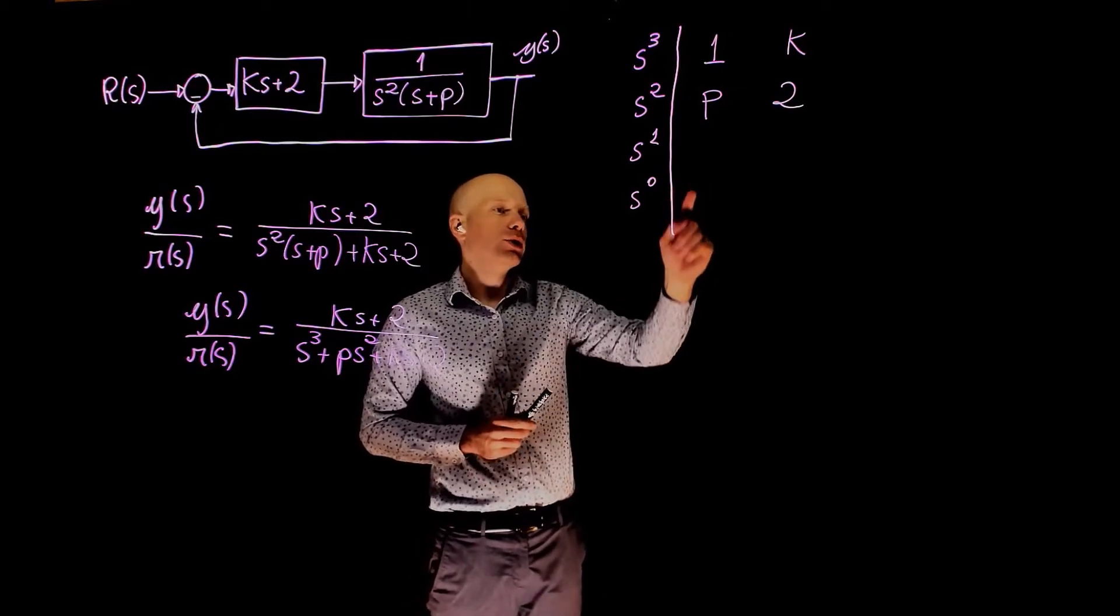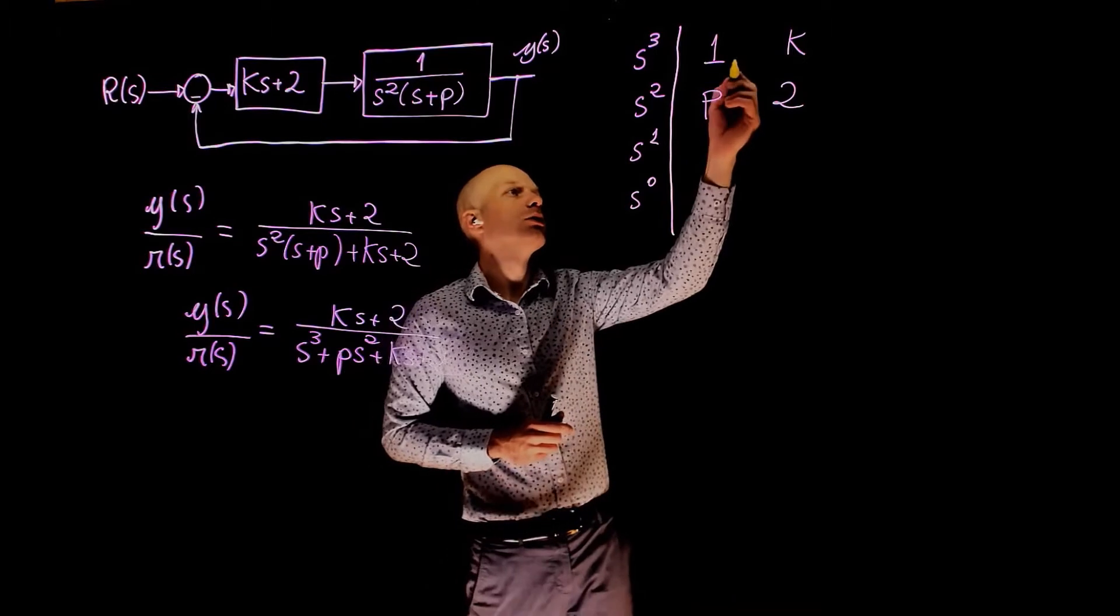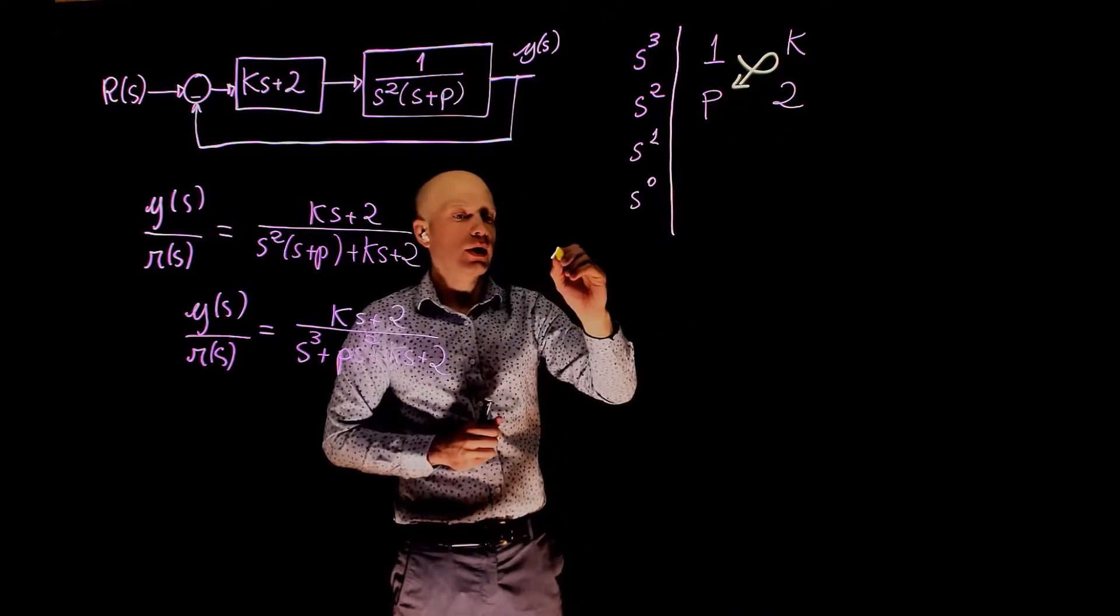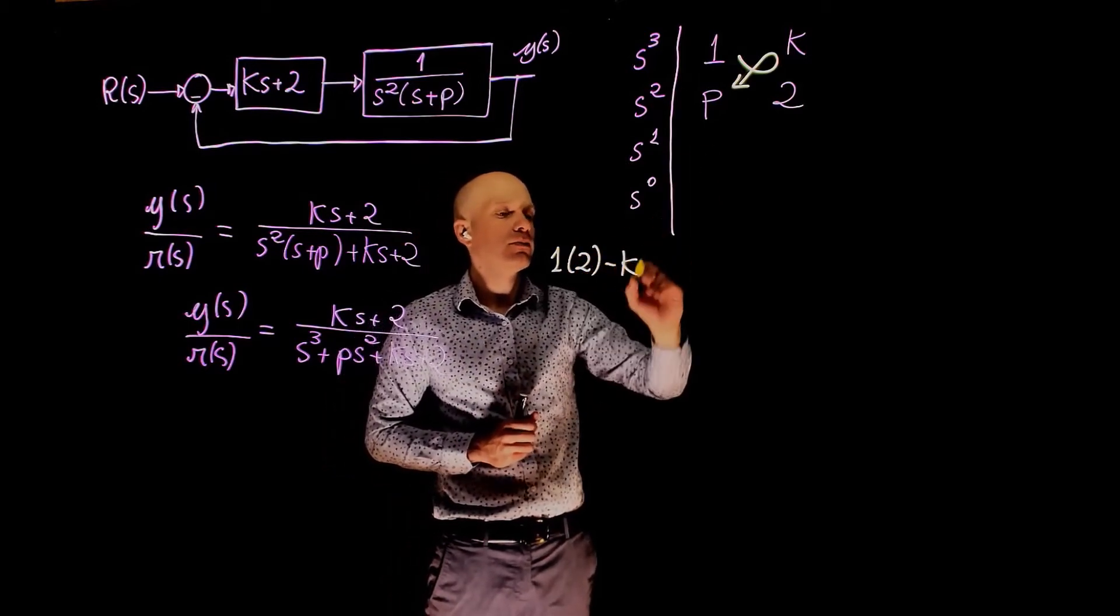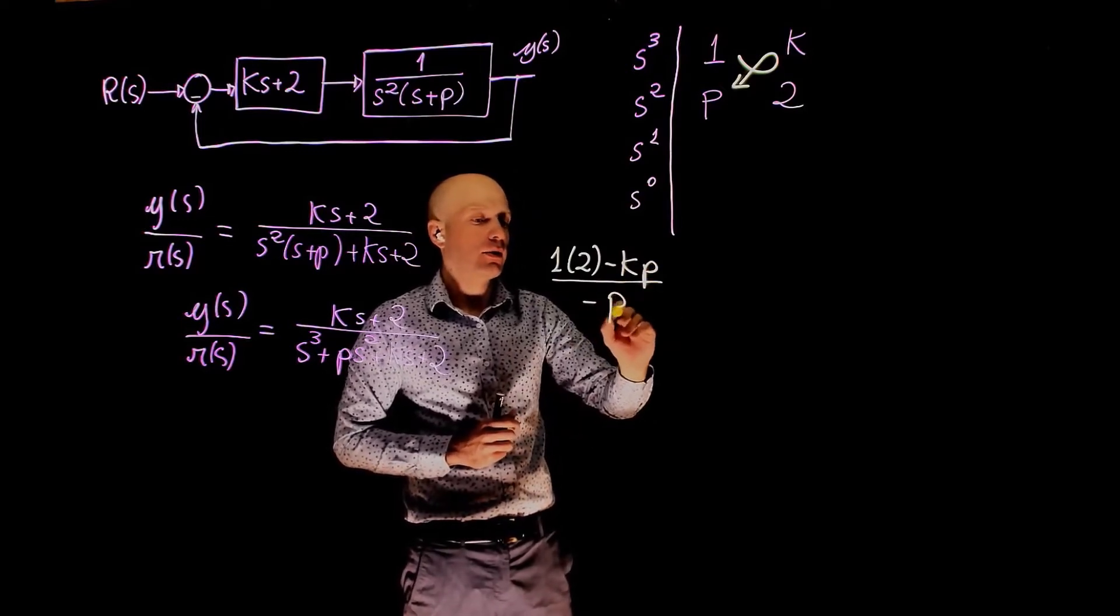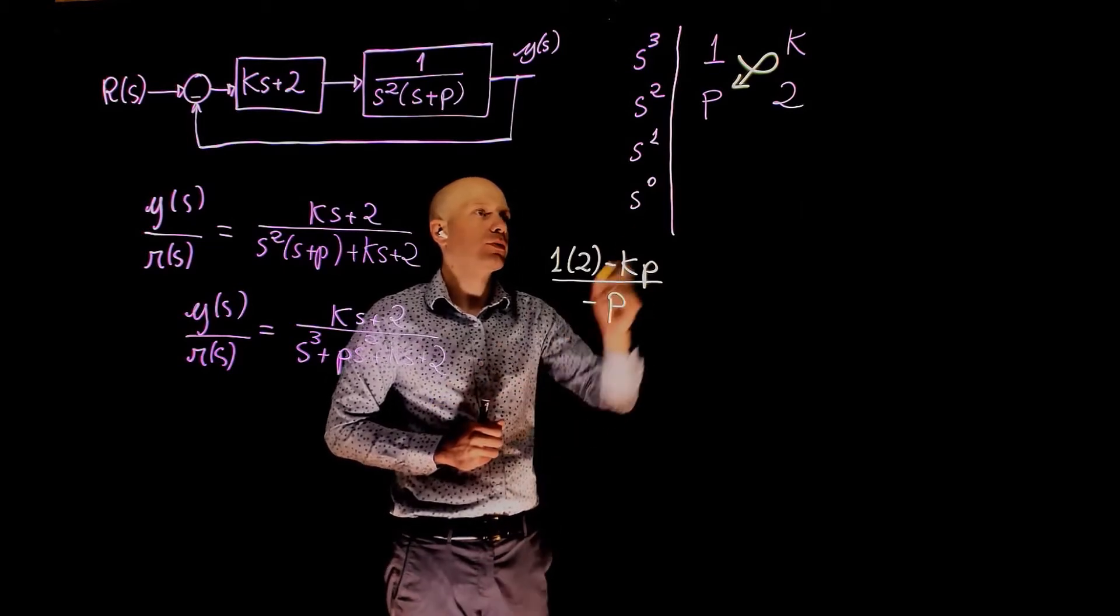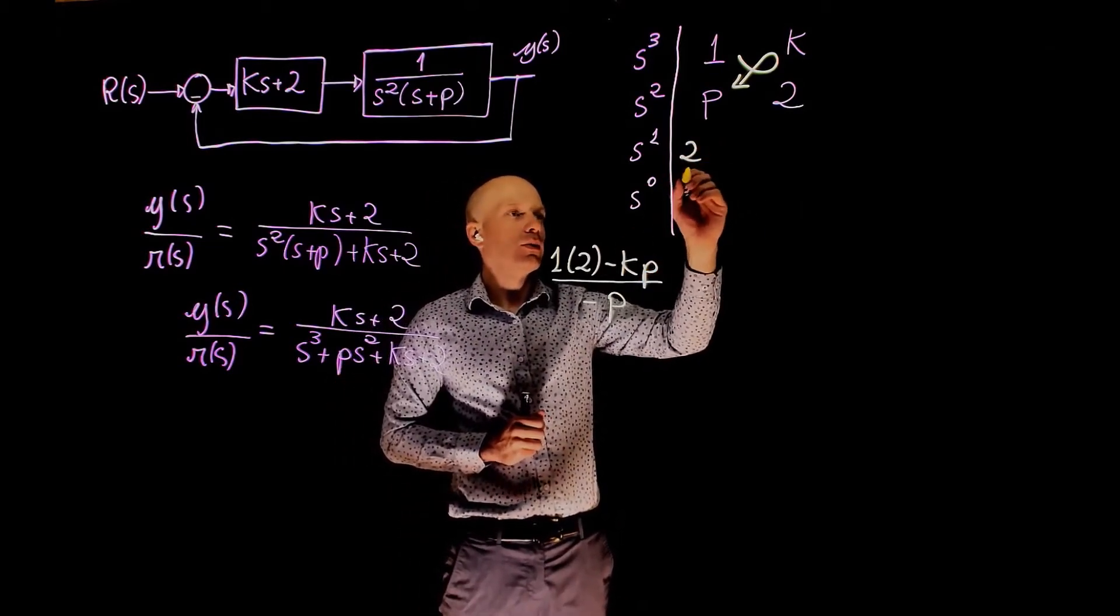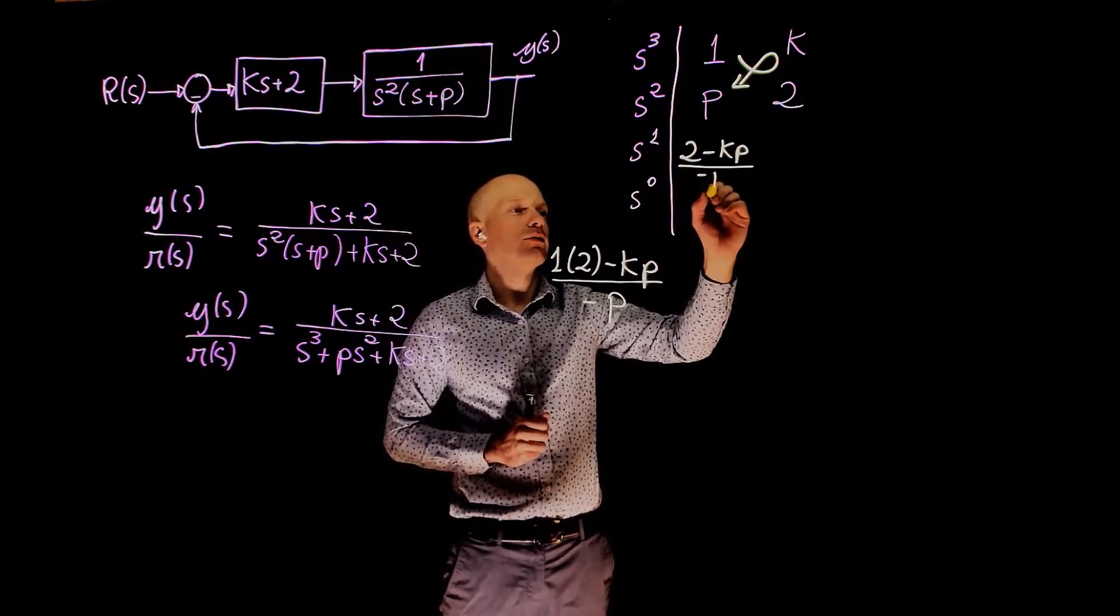All we need to determine now is these two elements. Starting with this one, we have 1 times 2 minus k times p divided by negative p. So here we have 2 minus k times p over negative p.